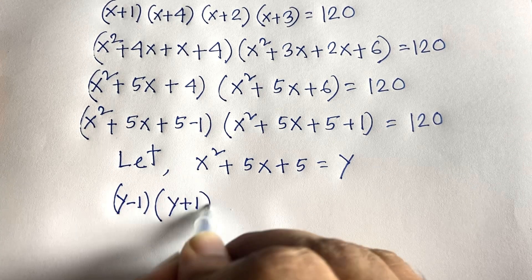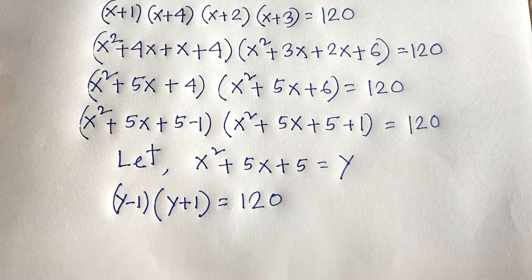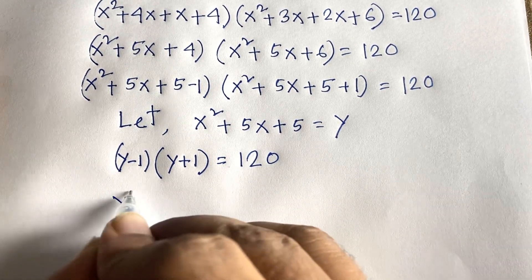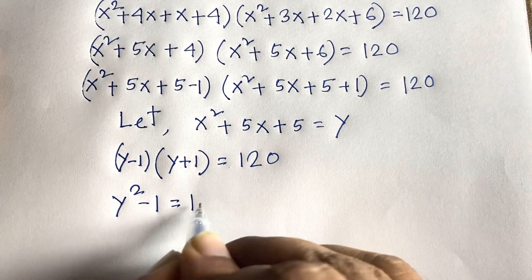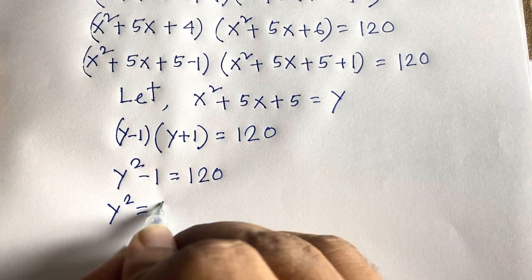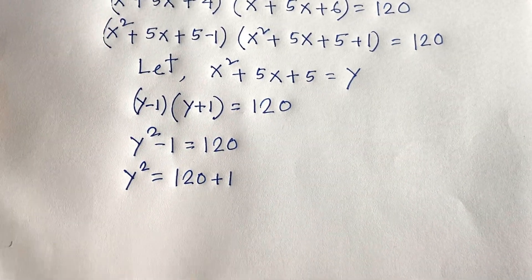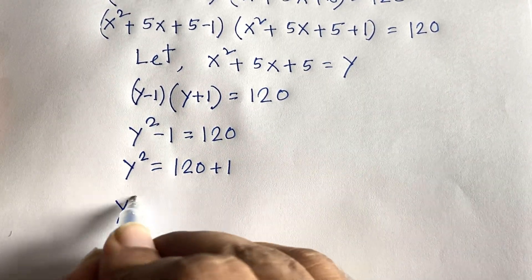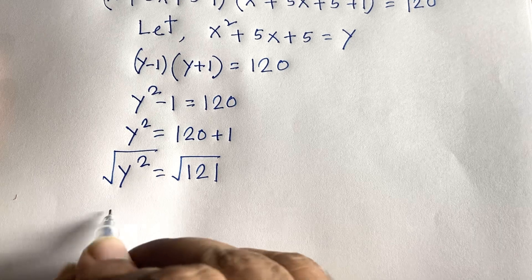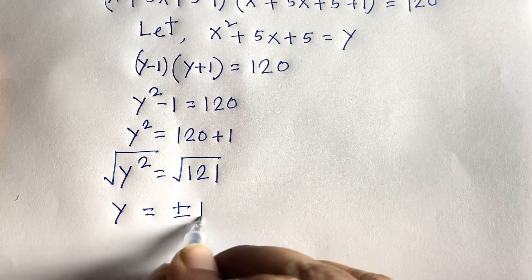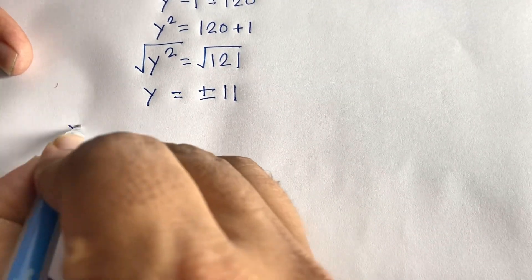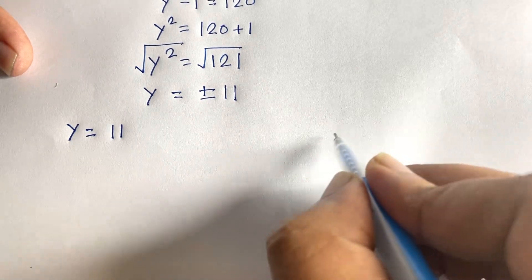Applying the identity (a - b)(a + b) = a² - b², we get y² - 1 = 120. Moving the 1 to the other side: y² = 121. Taking the square root of both sides, we find y = ±11, so y = positive 11 or y = negative 11.